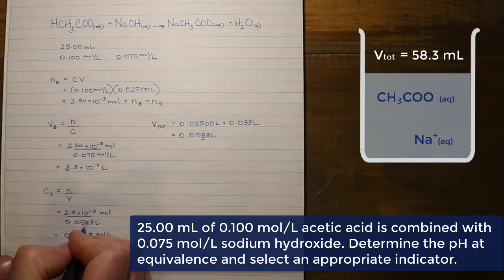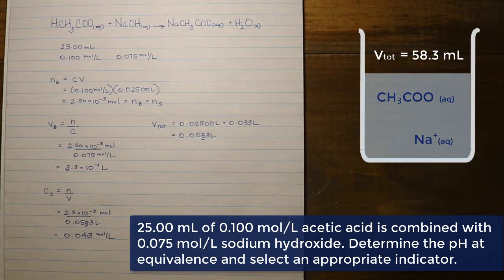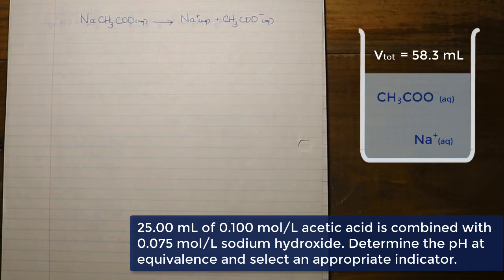The significant digits in the moles of salt were slightly underrepresented, but ultimately the value is expressed to two significant digits anyway. At this point we've figured out the concentration of the salt in the reaction mixture, but we still need to determine the pH. We need to analyze the salt further — specifically looking at what component of the salt is going to impact pH.